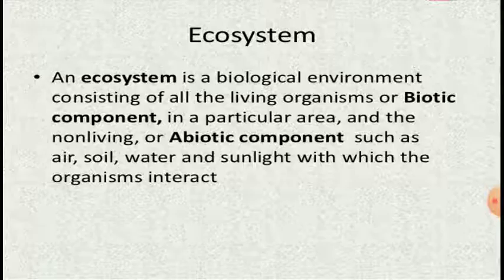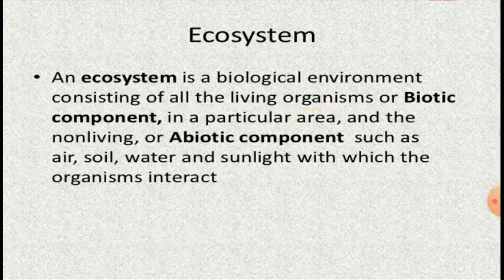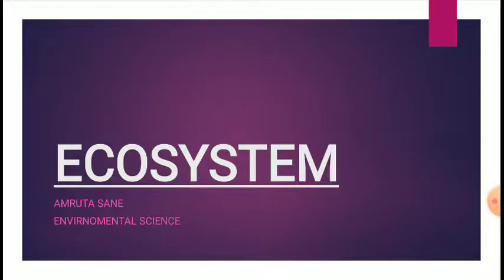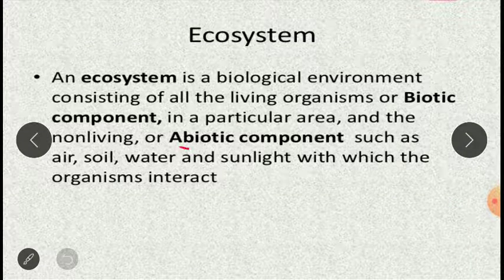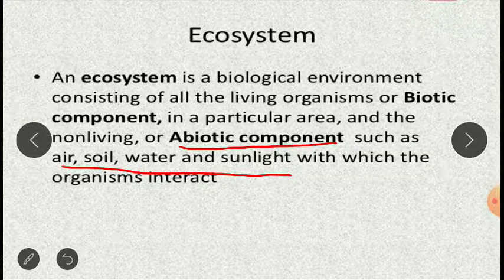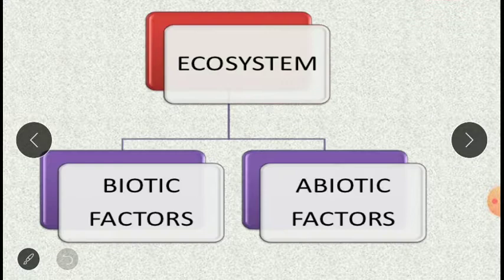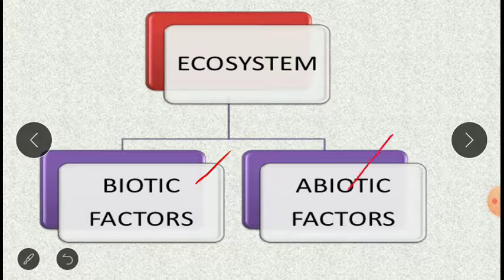If we are talking about a practical definition, it is nothing but the living organisms which are going to be your biotic components in a particular area, together with the non-living things that are the abiotic components like air, water, and sunlight, interacting with the organisms to form an ecosystem. The structure of the ecosystem, or the components of the ecosystem, is formed of two components: biotic factors and abiotic factors.